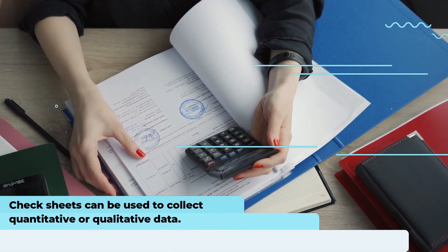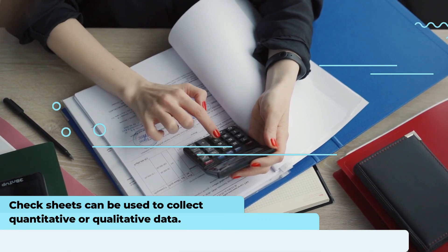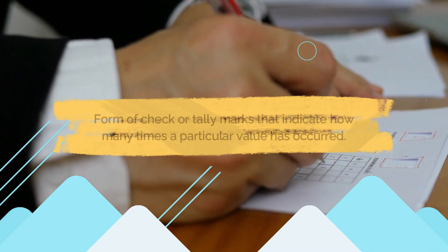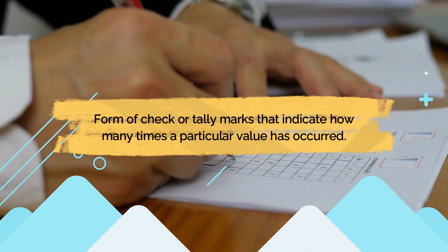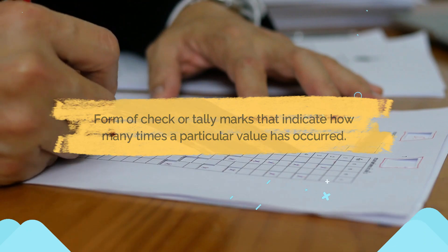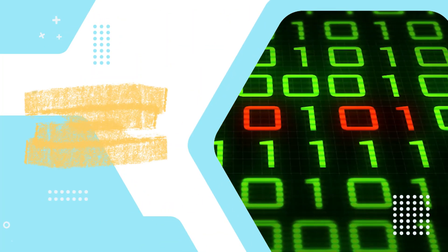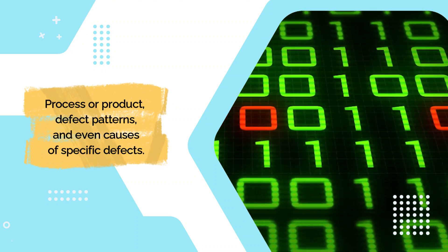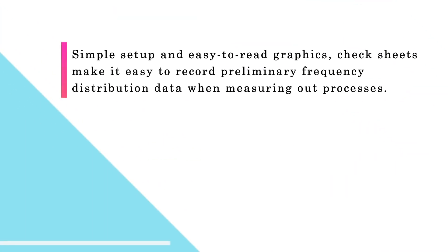Third is check sheet, or tally sheet. Check sheets can be used to collect quantitative or qualitative data; when used to collect quantitative data, they can be called a tally sheet. A check sheet collects data in the form of check or tally marks that indicate how many times a particular value has occurred, allowing you to quickly zero in on defects or errors within your process or product, defect patterns, and even causes of specific defects. With its simple setup and easy-to-read graphics, check sheets make it easy to record preliminary frequency distribution data when measuring processes.